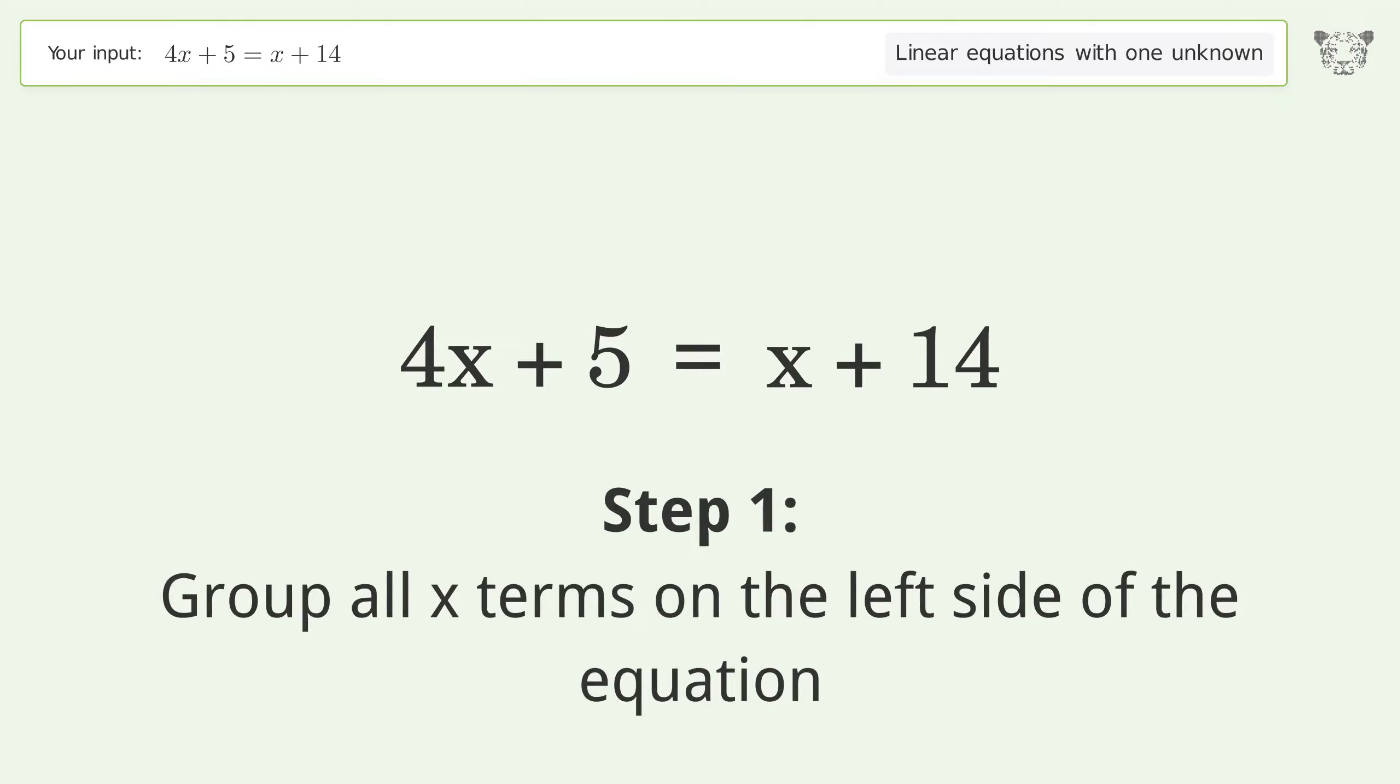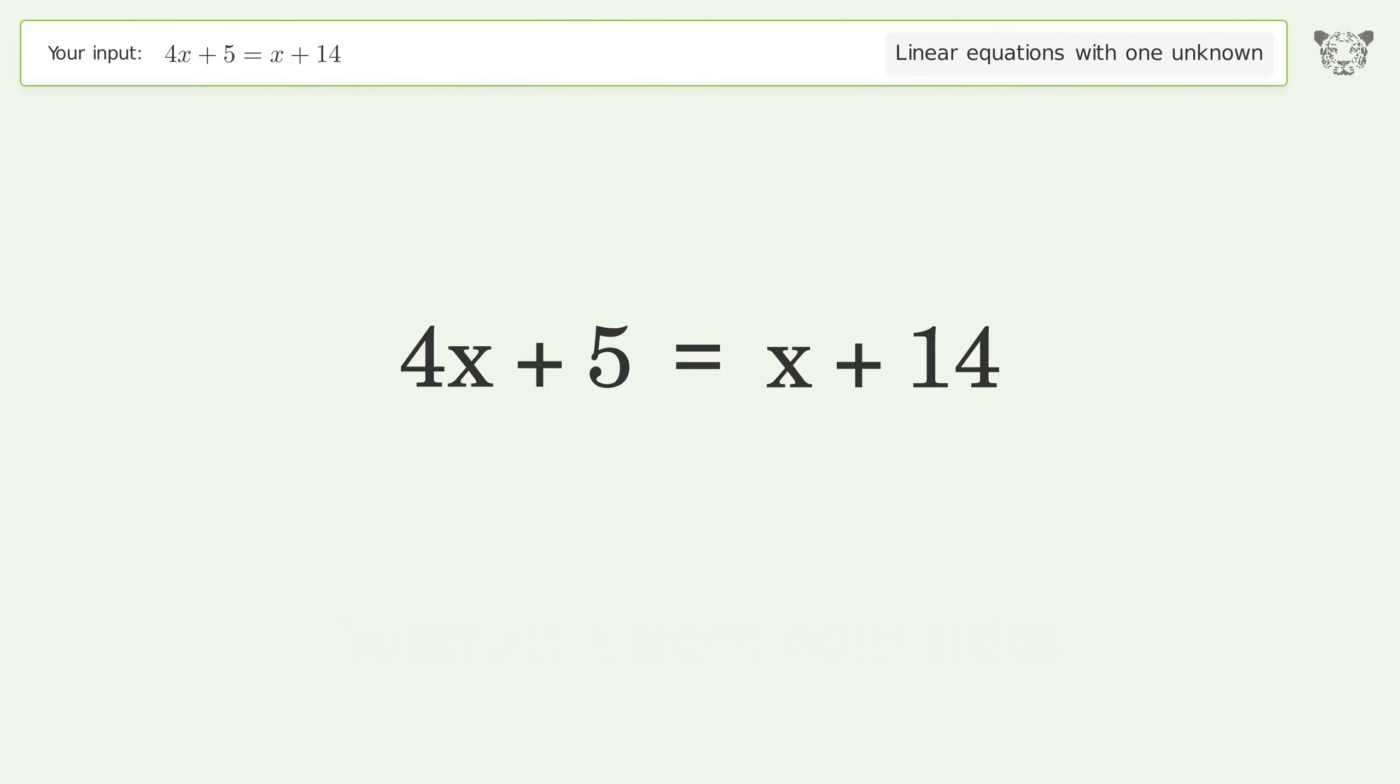Group all x terms on the left side of the equation. Subtract x from both sides. Group like terms. Simplify the arithmetic.